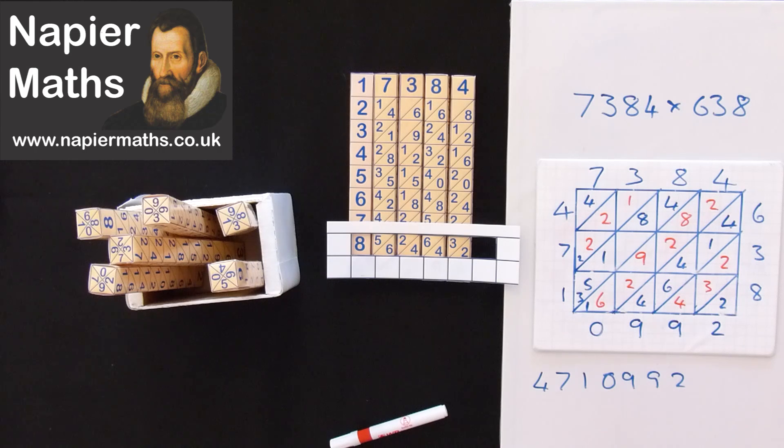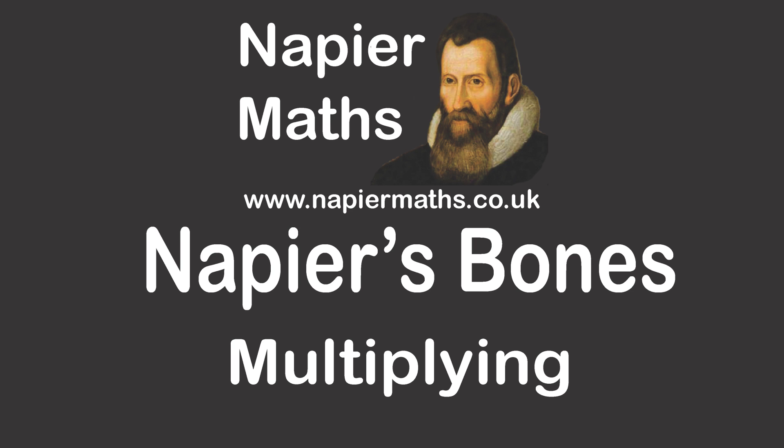Now, did you see how easy all of this was? The thing you should do now is to print out some bones to make up or use the simpler strips. But you should really have a go at this. You'll really enjoy it. Napier's bones makes multiplication so easy.